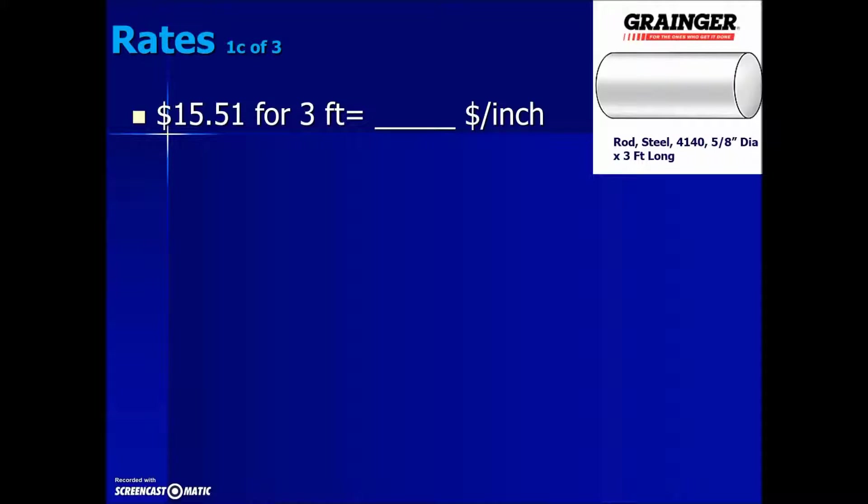In this next example, we have a price per 3 feet and the question is asking us what is an equivalent price per inch. If we look at the generic rate, we're talking about price per unit of length. The specifics will replace money, $15.51 in the price. Length we're given per 3 feet, so here we will put the 3 feet. The goal is to get this converted into an equivalent price, which is already taken care of, per inch. That's where the problem is, we need to convert our foot measurement into inches.